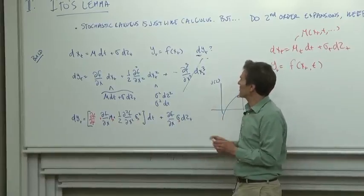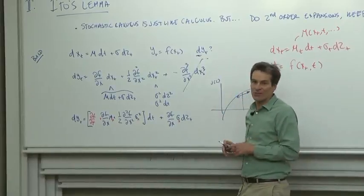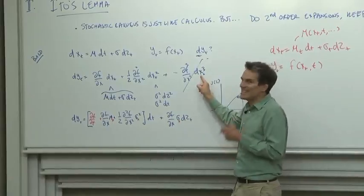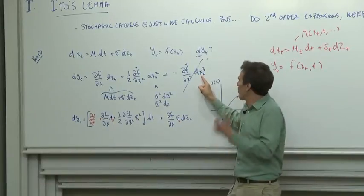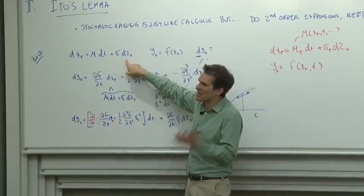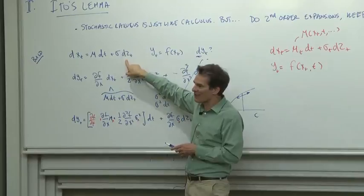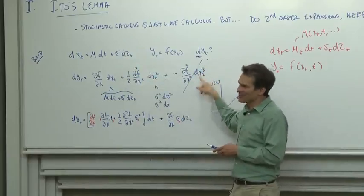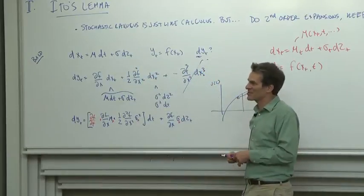But your question is very important because it illustrates some of the art of doing these things. When you see dx³, you should know, well, what's the best order of dx³? It's got in it a dz. It's going to be of order dz to the 1 and 1 half. But if you can see that ahead of time, you're going to be able to answer these questions much more quickly.